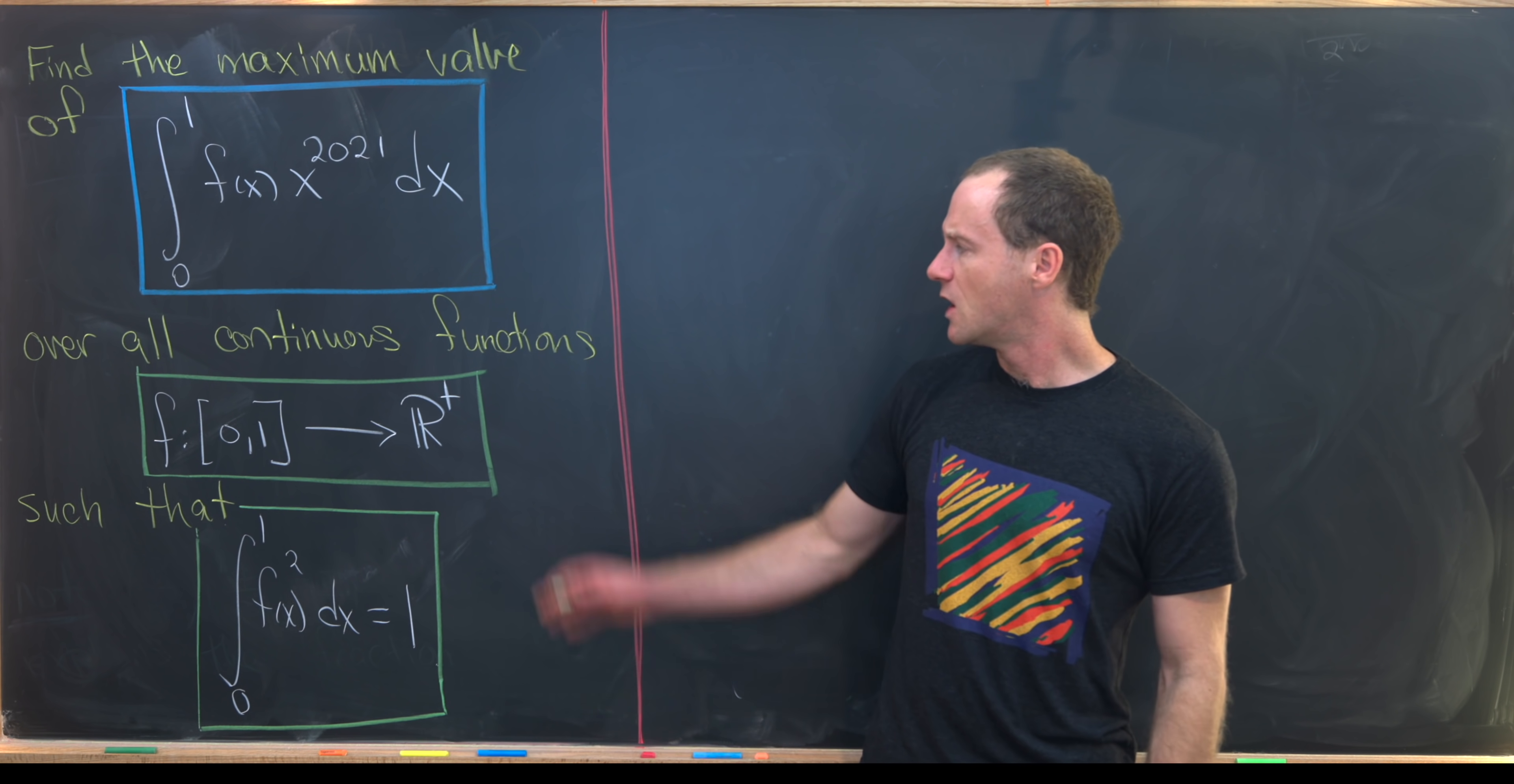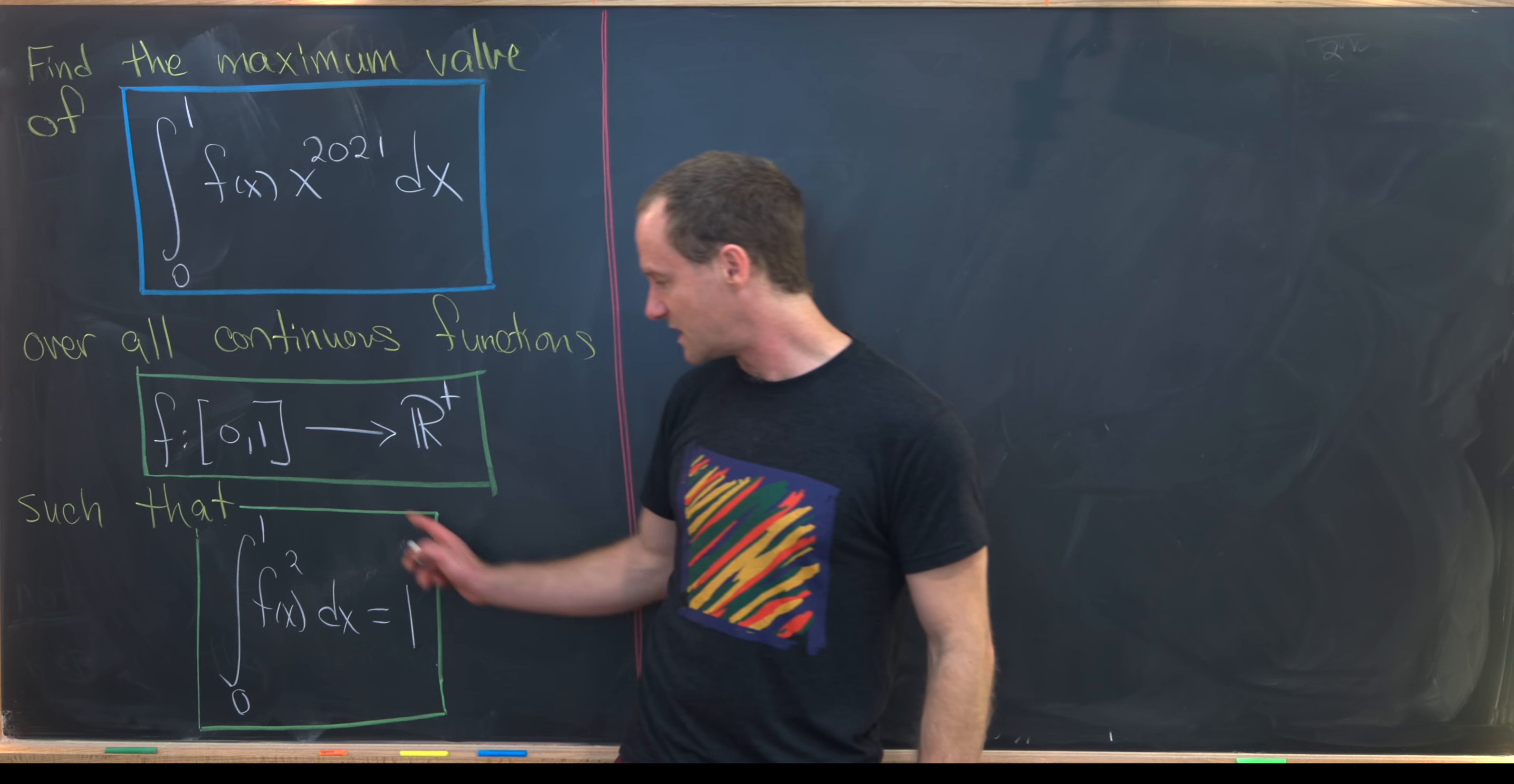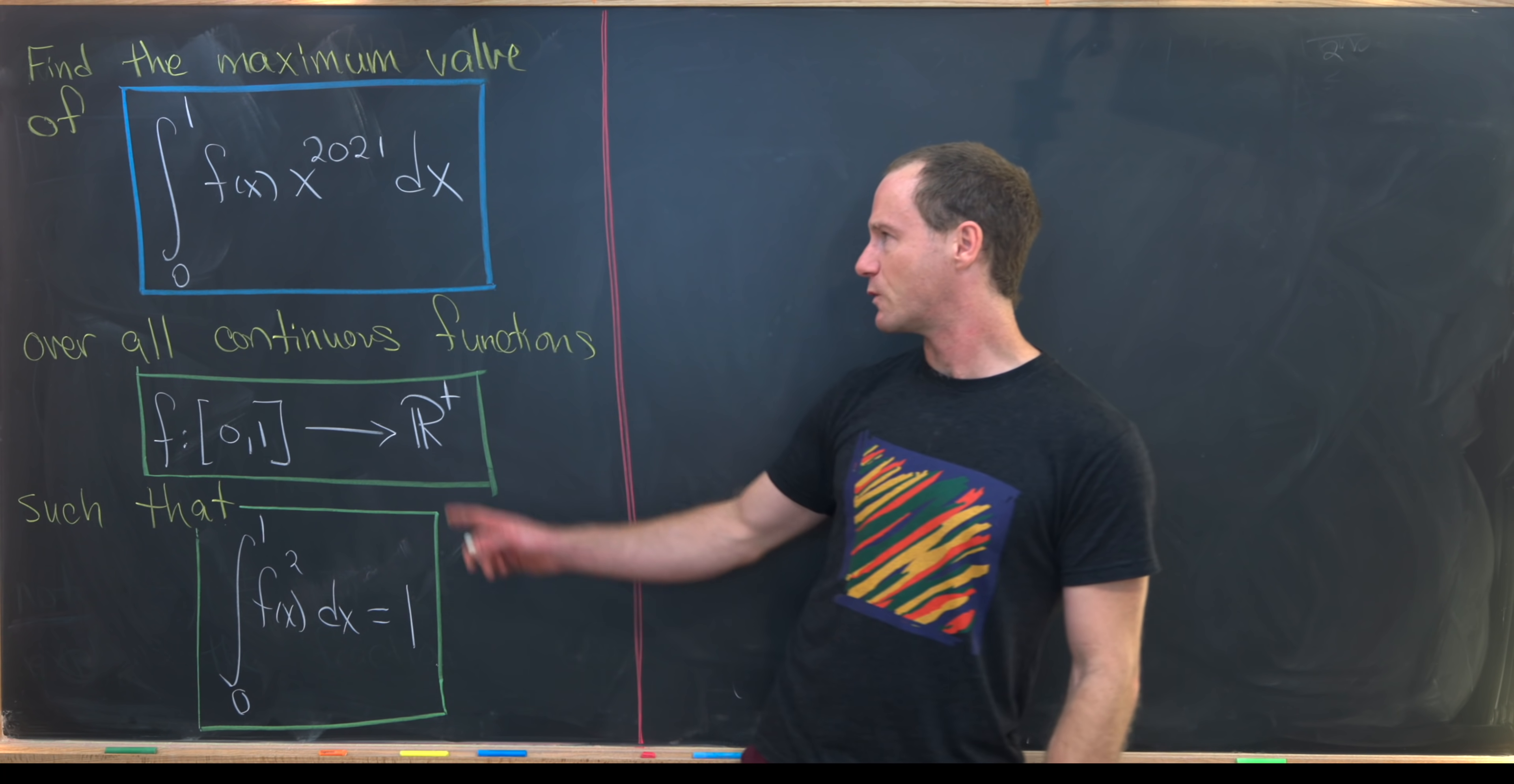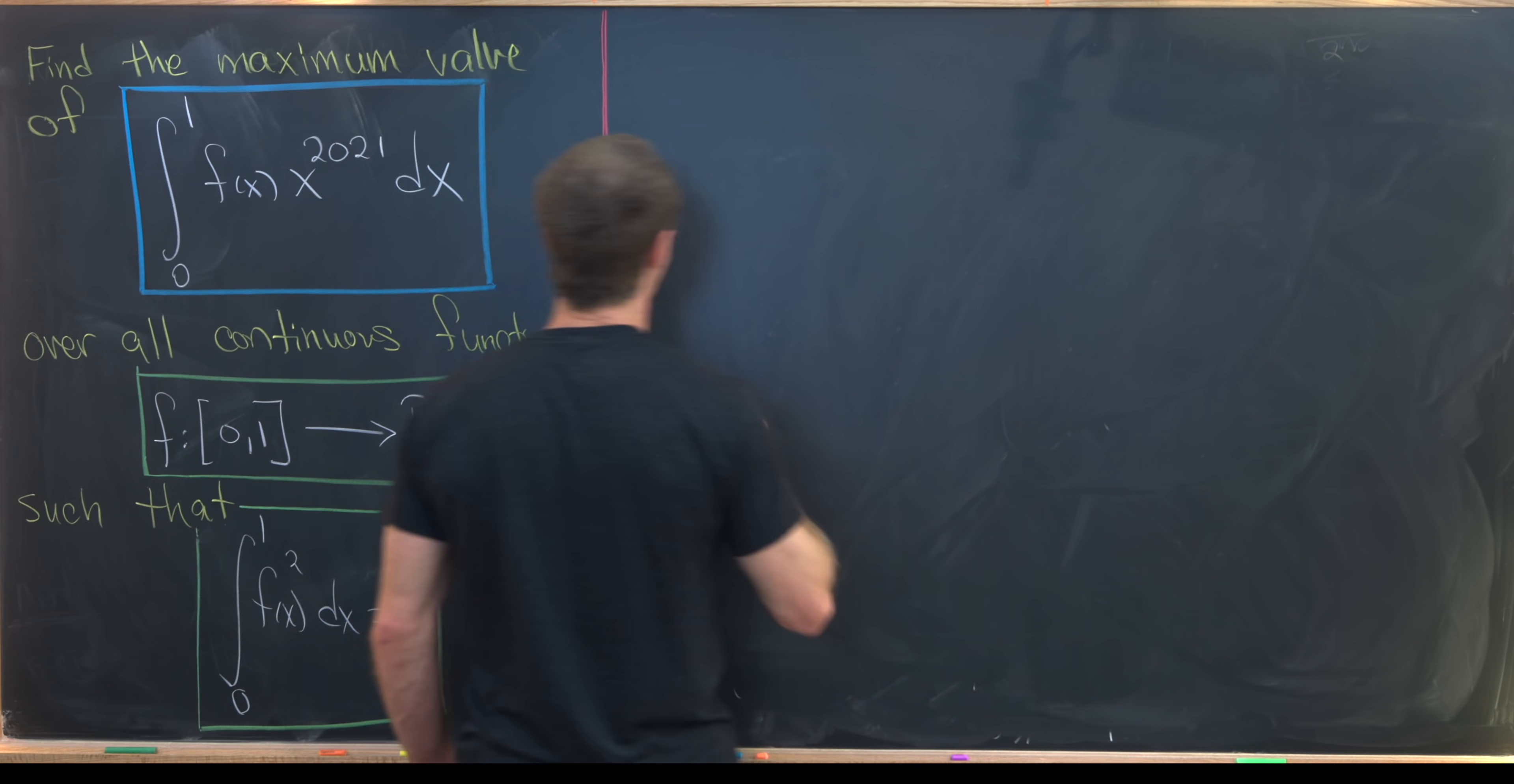Let's see some hints built into this problem. Maybe the most glaring one is not the fact that this thing equals 1, but the fact that we have the square of f(x) on the inside of that integral. That means we probably want to start by squaring our goal integral and seeing where that takes us. That's exactly what we'll do.